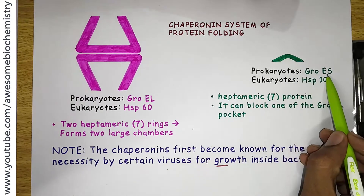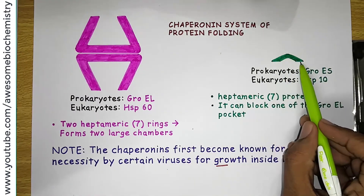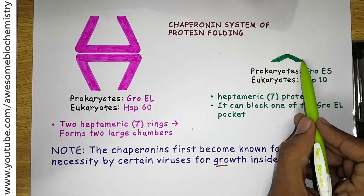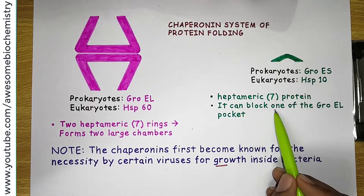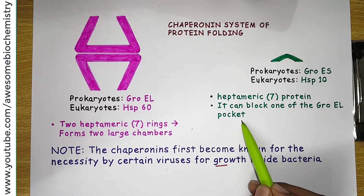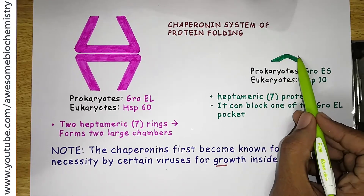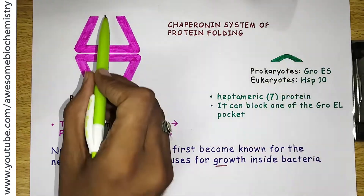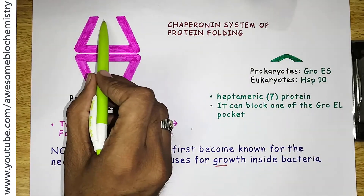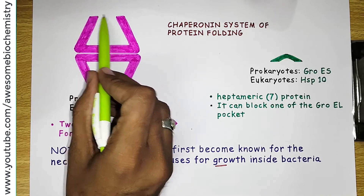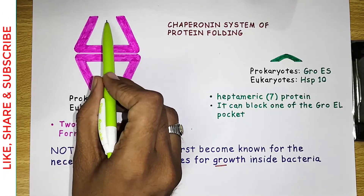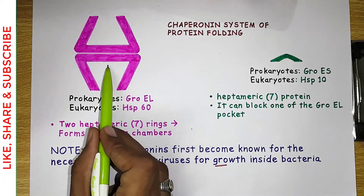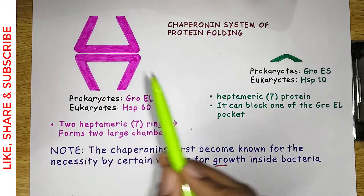Coming to GroES, it is a cap-like structure and it is a heptameric protein, meaning seven subunits are present. It can block one of the GroEL pockets. As you can see, this cap-like structure can bind with the apical region of GroEL. Once it is bound there, that chamber closes — if it binds at that place, the chamber gets closed.